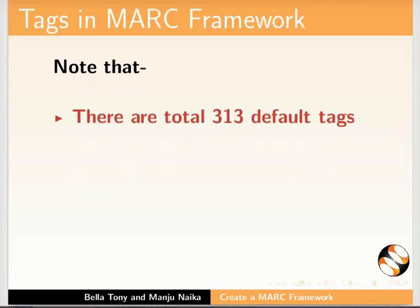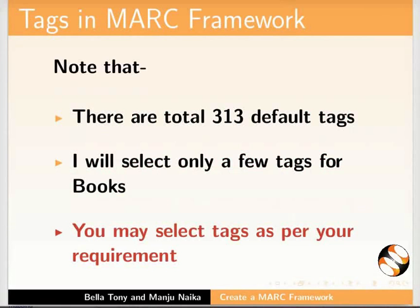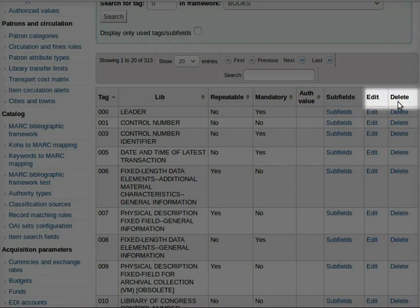Note that there are a total of 313 default tags. I will select only a few tags for Books. You may select tags as per your requirement. Notice here that there are options to edit or delete a tag.